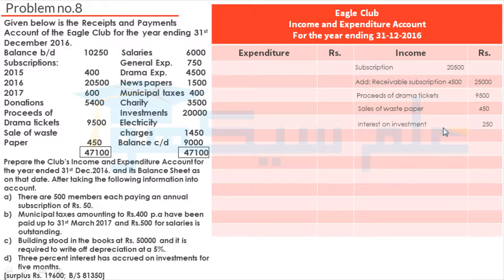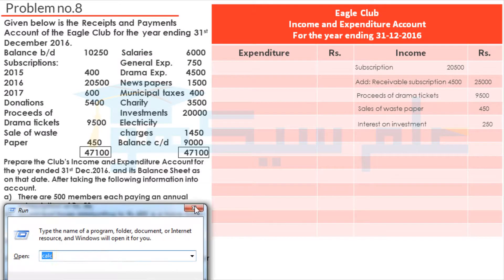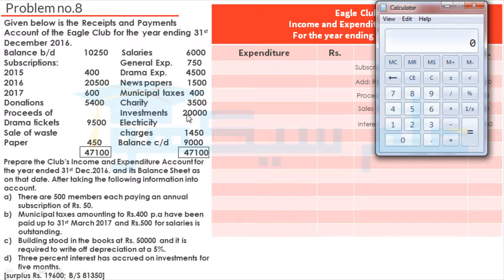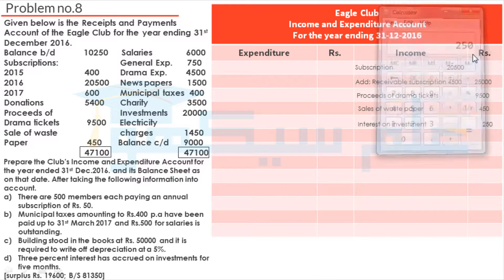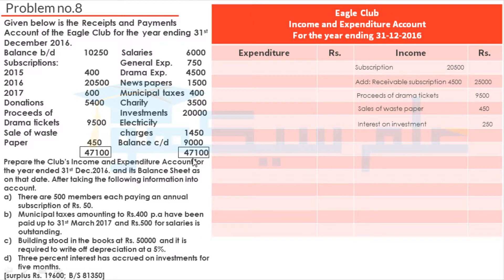After that, we have interest on investment. We will calculate this now. Investment amount is Rs. 20,000, and the rate is 3%, and this is outstanding for 5 months, divided by 12, so we have interest on investment Rs. 250. After that, we will record donations Rs. 5,400. Income side total is Rs. 40,600.